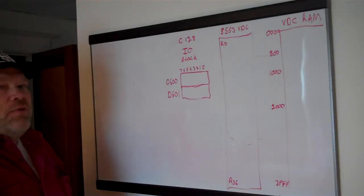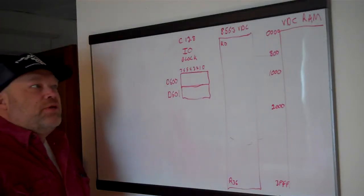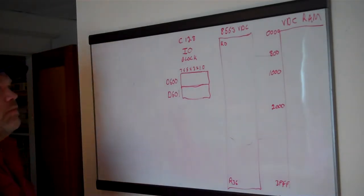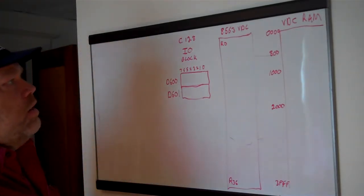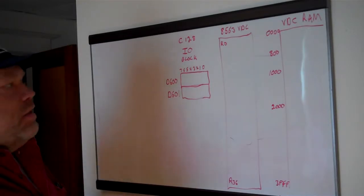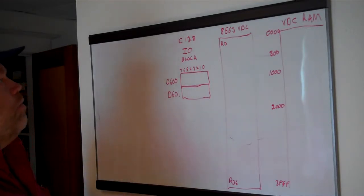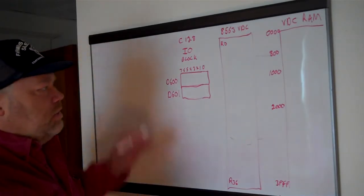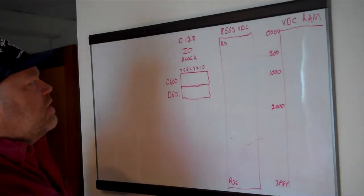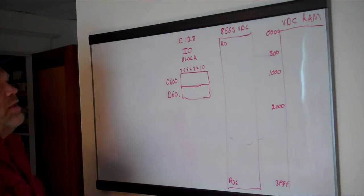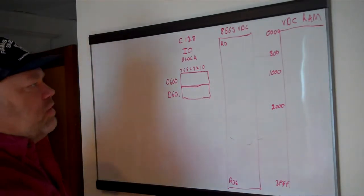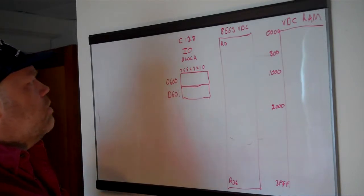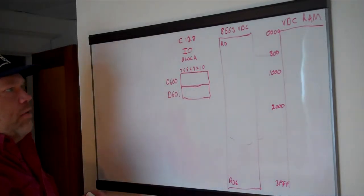Hello and welcome to Commodore 128 Assembly Language Programming. Today we're going to talk about programming the 80-column chip that's in the Commodore 128 and how to put things on the 80-column screen. There aren't very many games for 80-column because of the complexity and how much slower it is to put things on the screen, especially in bitmap mode, but there are also some nice features.